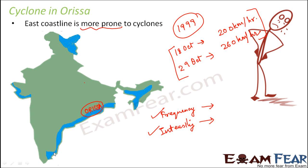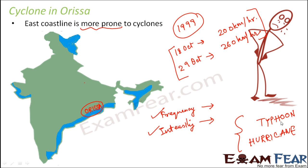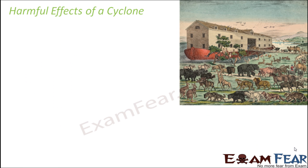Cyclones are known by different names in different parts of the world. In India we call it a cyclone, in Japan the term typhoon is used, and in America it is called a hurricane. These are different terms for more or less the same natural phenomenon, all capable of causing huge disasters.